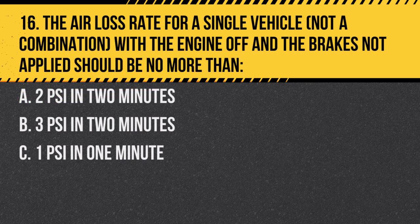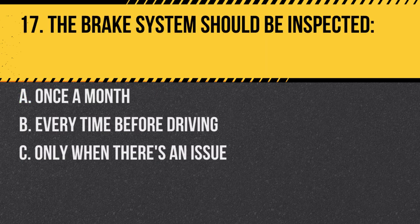Question 16. The air loss rate for a single vehicle (not a combination), with the engine off and the brakes not applied, should be no more than: A. Two psi in two minutes. B. Three psi in two minutes. C. One psi in one minute. Answer A. Two psi in two minutes. This ensures minimal leakage when brakes aren't applied.